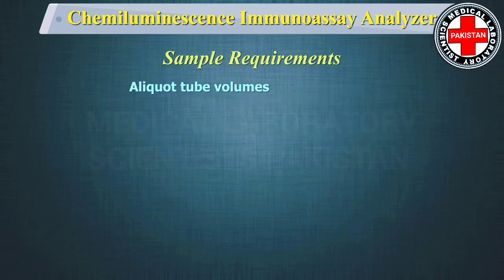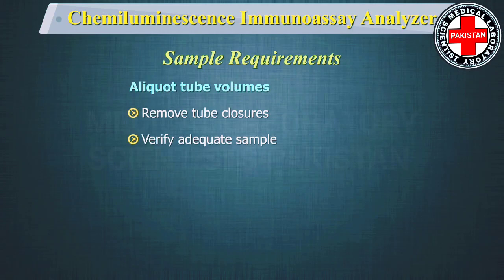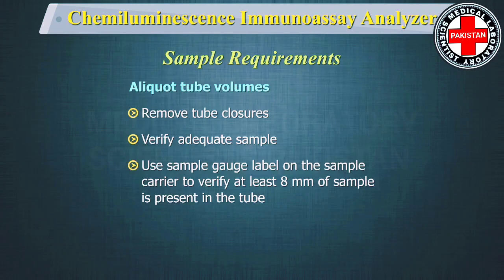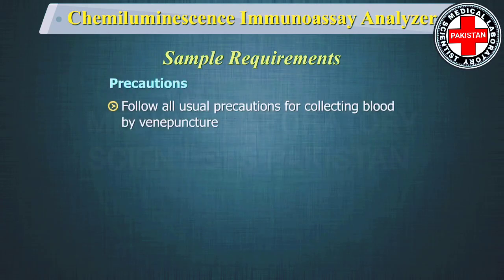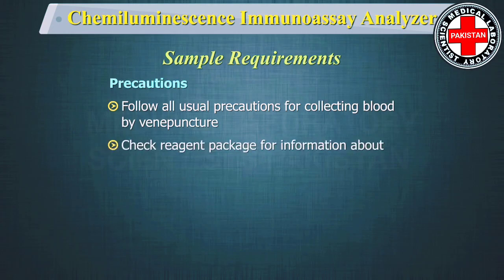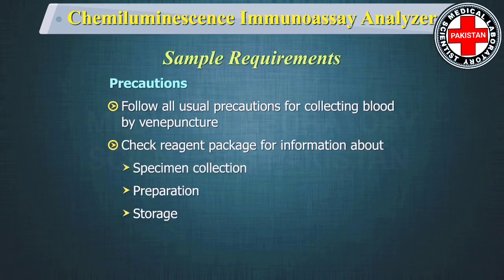When using aliquot tubes, remove any tube closures and verify adequate sample is present in the tube. Use the sample gauge label on the sample carrier to verify that at least 8 mm of sample is present in the tube. Follow all usual precautions for collecting blood by venipuncture to avoid specimen hemolysis. See the reagent package insert for detailed assay-specific information about specimen collection, preparation, and storage.